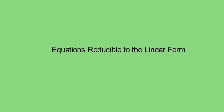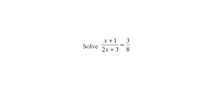Let us see equations reducible to the linear form. Here is a question to solve: (x + 1) / (2x + 3) = 3/8. Here, in the denominator also, variables are there — that is 2x plus 3. It is a very simple method to solve.